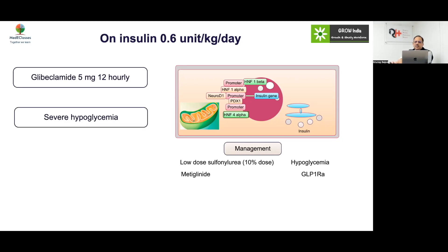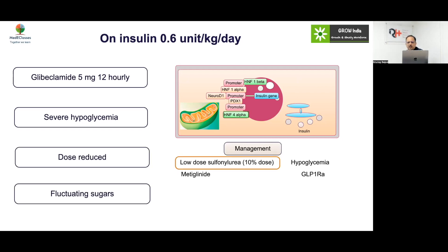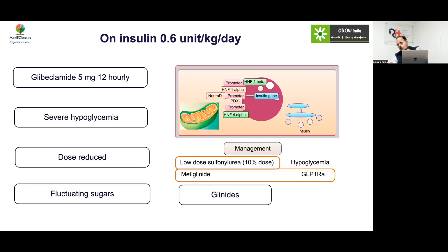On insulin 0.6 units per kg per day, glibenclamide was started once the genetic mutation was confirmed, and the patient developed severe hypoglycemia. The error: glibenclamide was started at too high a dose. MODY patients are very sensitive to sulfonylureas — only 10 to 25 percent of the adult dose should be used. A low dose of sulfonylurea should be started, and alternatives like glinides, which have rapid onset and are easier to control, or GLP-1 receptor analogs can also be considered.